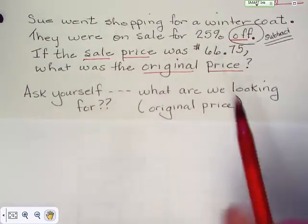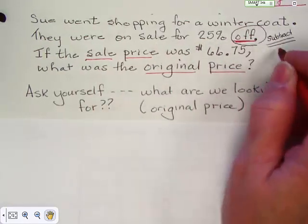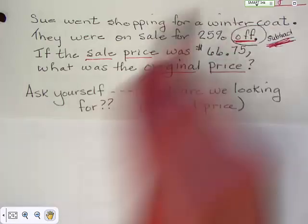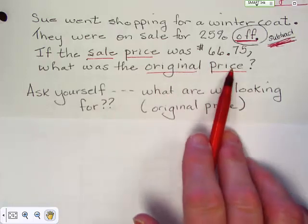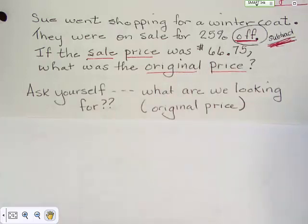And they would definitely be on sale for twenty five percent off. Off gives you a clue right there that it's going to be subtraction. If the sale price was sixty six seventy five, what is the original price? Meaning what did they start from. What was the hundred percent.